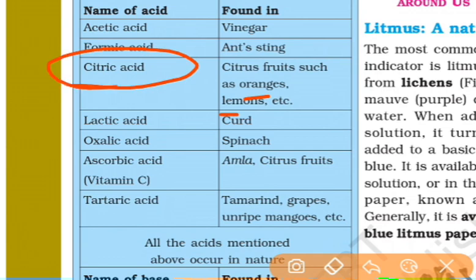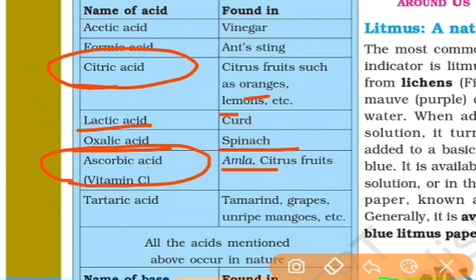Next is lactic acid, and there is also oxalic acid. Ascorbic acid is Vitamin C. Ascorbic acid is found in amla. Fruits like grapes and mango contain tartaric acid.